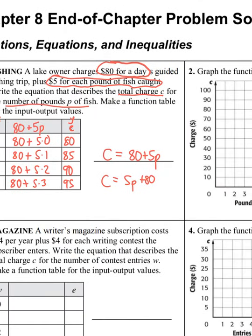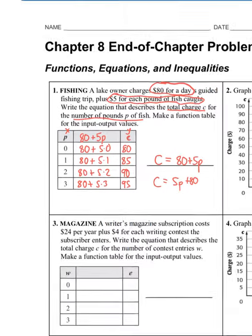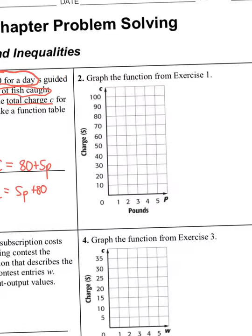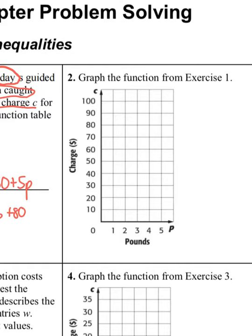Now we need to graph our function. The P values are the X values and the C values are the Y values: (0, 80), (1, 85), (2, 90), (3, 95). We catch zero pounds, we plot a dot at 80; one pound at 85; two pounds at 90; and three pounds at 95. That's how we graph that function equation.